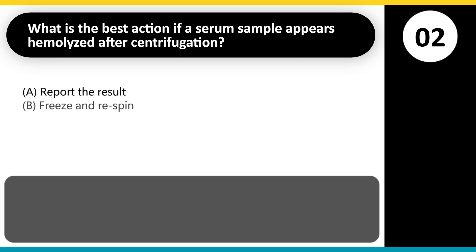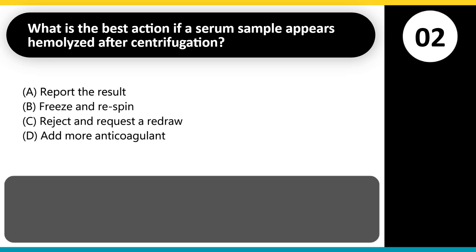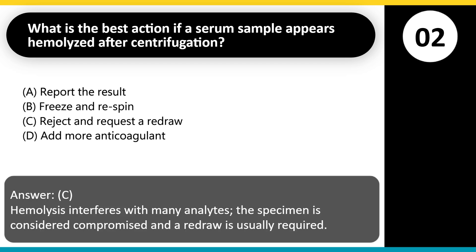What is the best action if a serum sample appears hemolyzed after centrifugation? A. Report the result. B. Freeze and re-spin. C. Reject and request a redraw. D. Add more anticoagulant. Answer: C. Hemolysis interferes with many analytes. The specimen is considered compromised and a redraw is usually required.